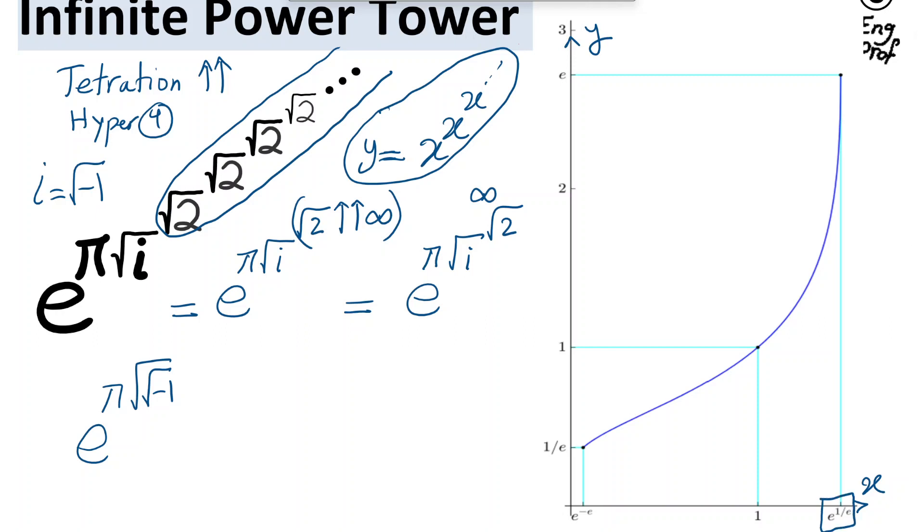This well-known study says, as long as x is maximum e to the 1 over e, and minimum e to the negative e, then it will converge as a singular solution for y, between 1 over e and e itself. Now the good news is, the upper limit of convergence for x, e to the 1 over e, is roughly 1.444.